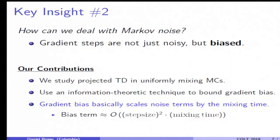Now, the second key insight is a technique for dealing with noise that is Markovian rather than IID. And the key challenge there is that gradient steps are then not just noisy. They can be heavily biased. Because the parameter at which I'm evaluating my gradient is a function of the recent past, which is strongly correlated with the next observation I get. So the key here, studying projected TD on uniformly mixing Markov chains, we give some kind of information theoretic technique to control the bias of the gradients in that case.